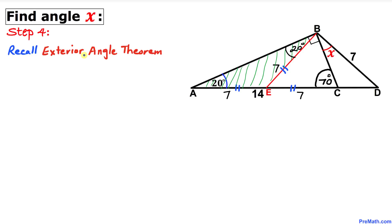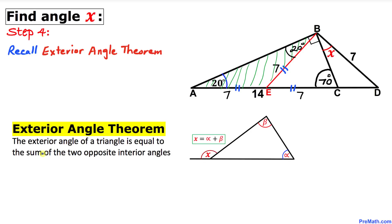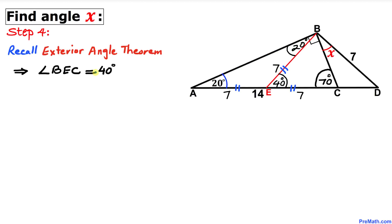Now let's recall the exterior angle theorem: the exterior angle of a triangle equals the sum of the two opposite interior angles. In our case, angle BEC is the exterior angle, equal to the sum of the two opposite interior angles — 20 plus 20 — giving 40 degrees. Thus angle BEC turns out to be 40 degrees.